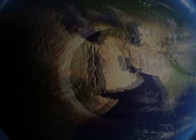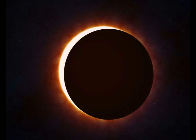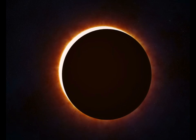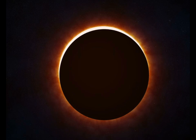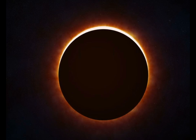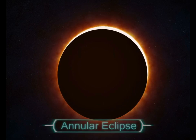Sometimes when the sun and the moon are exactly in line, the apparent size of the moon is smaller than the sun. Thus the sun appears as a bright ring, or annulus, and we witness an annular eclipse.